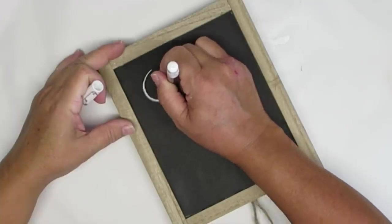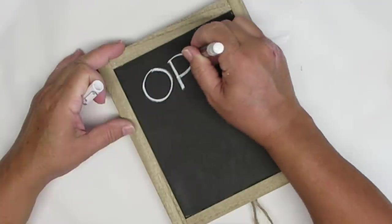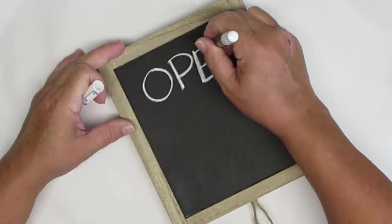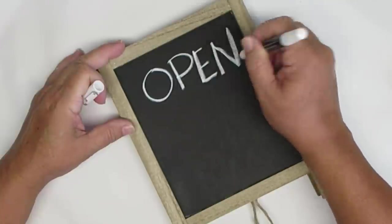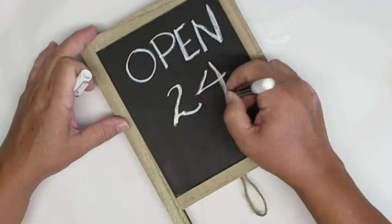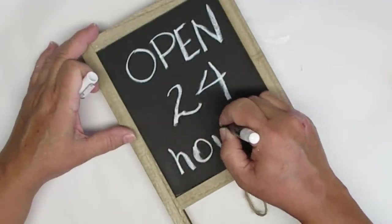The back of the sign is already a chalkboard so I'm just taking my chalk writer and writing open 24 hours. I thought it would be really cute to say closed or self-service or anything like that and you could flip it around on your counter to tell everyone in your family when the kitchen is open or closed.